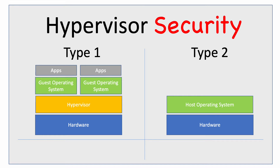In the Type 2 model, the host operating system runs on top of the hardware. Think of a Windows laptop or a Mac laptop, where the host OS is Windows or macOS. The hypervisor runs on top of that operating system alongside other applications, such as Microsoft Office. Examples of Type 2 hypervisors include VMware Workstation, VMware Fusion, and Oracle VirtualBox.